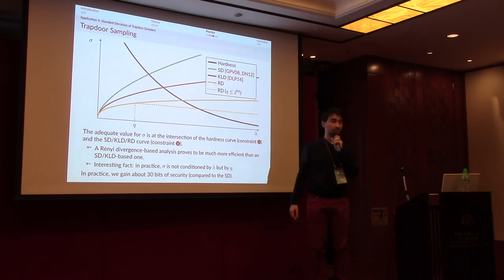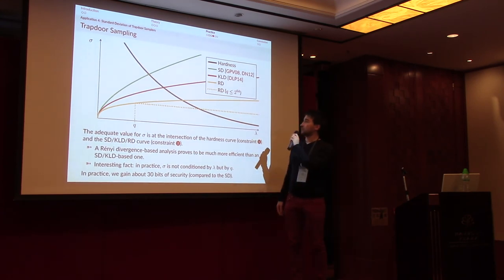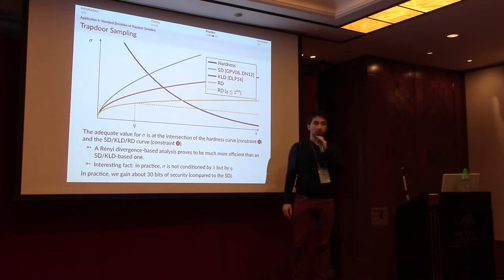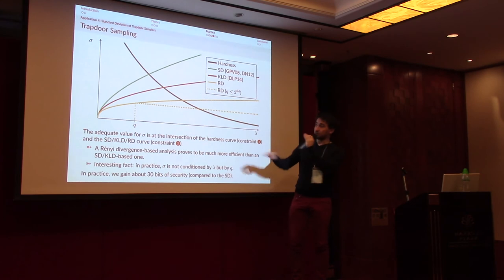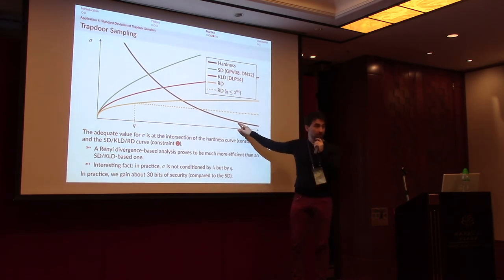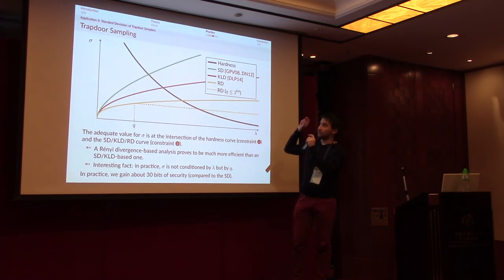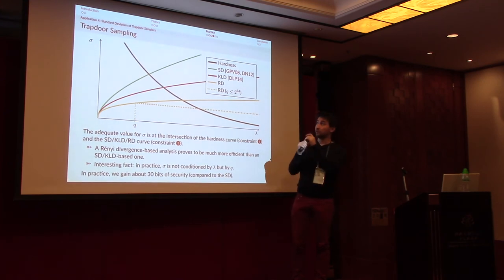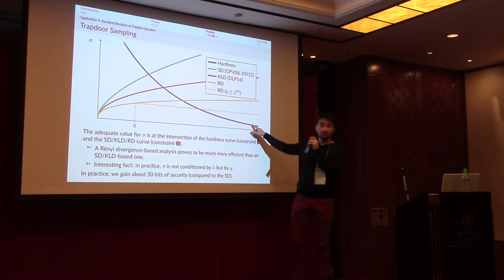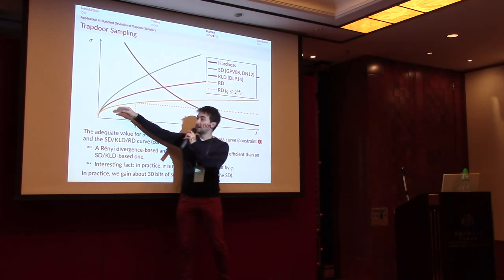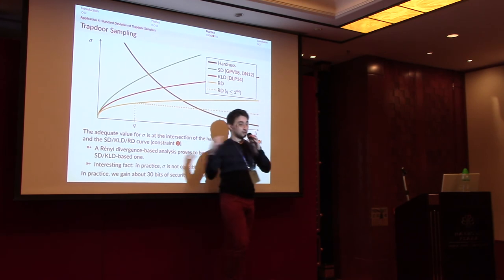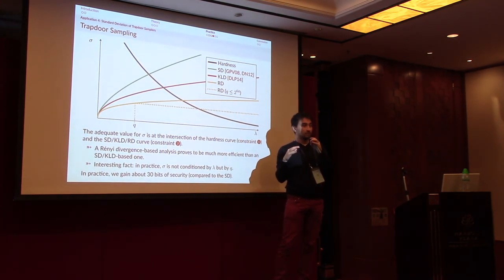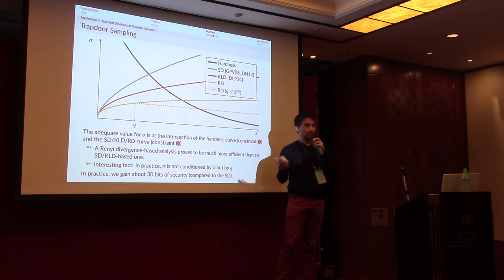Question: Does this hardness curve represent equal hardness, or does the line mean something specific? Answer: This is an optimization problem. The curve going down represents the hardness of the problem your trapdoor sampler is solving. If the trapdoor sampler solves a very hard problem, it correlates with having a very small standard deviation, because trying to imitate the behavior of the trapdoor sampler becomes very hard.